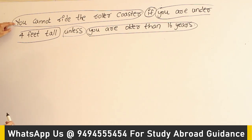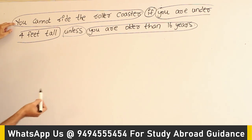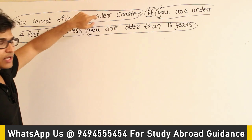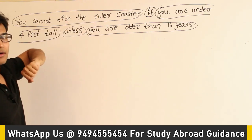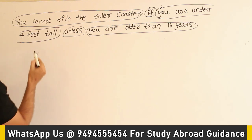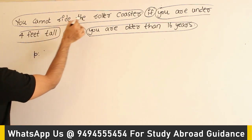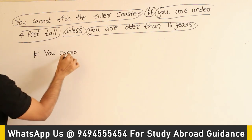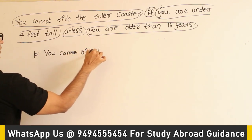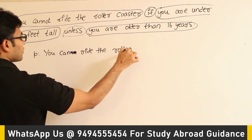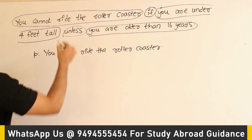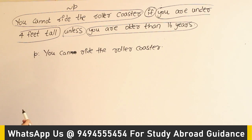Most of the cases in exam, you might find that negation is not being used in the variable representation — they will put the negation later. Which means, even though the statement is saying 'you cannot ride the roller coaster,' the actual variable will represent the positive form. Let us say P is the variable, and P is representing 'you can ride the roller coaster.' Then, this particular statement represents negation P.